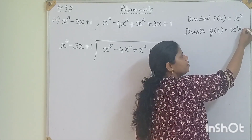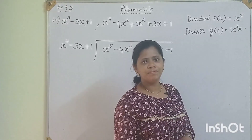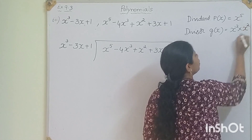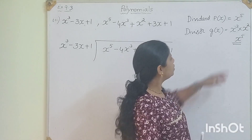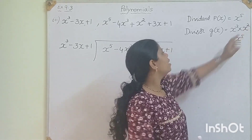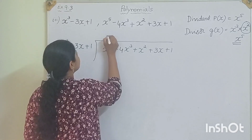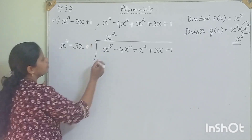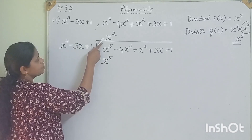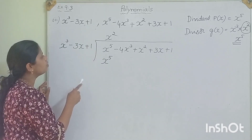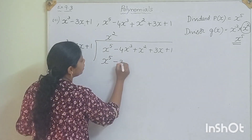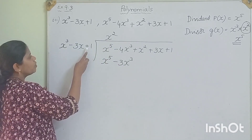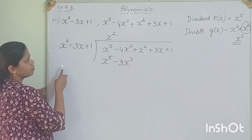Which number do we have to multiply to get x⁵ as the answer? We already have x cubed, and to get x⁵ we multiply by x squared. So we write x squared in the quotient. Plus into plus — x³ × x² = x⁵. Minus into plus is minus — 3x × x² = 3x cubed, so minus 3x cubed. Plus 1 × x² = plus x squared.